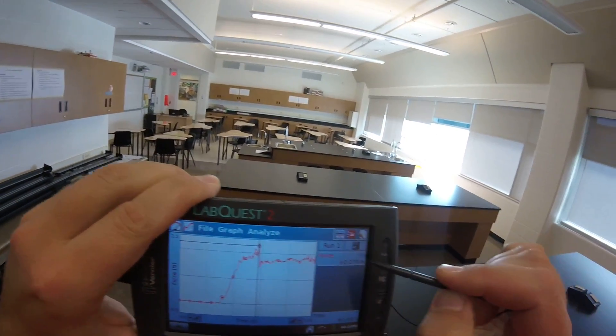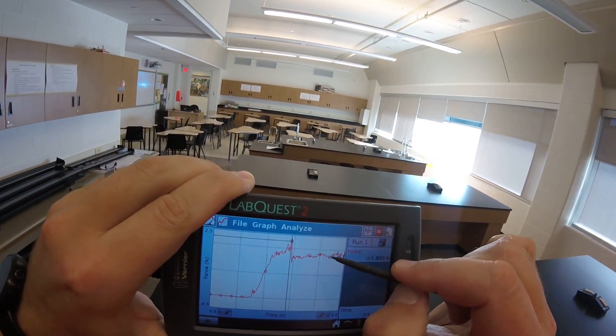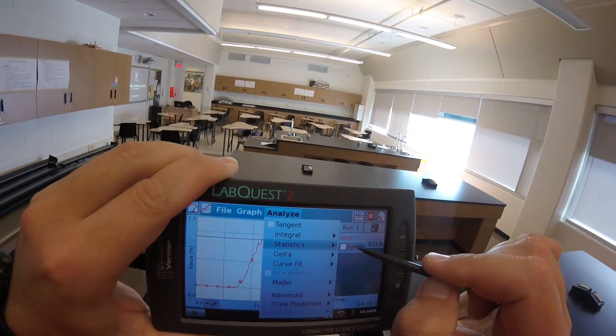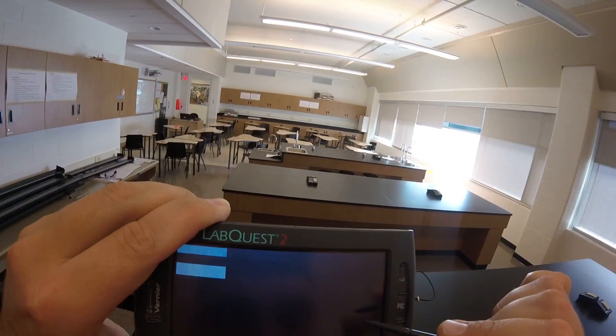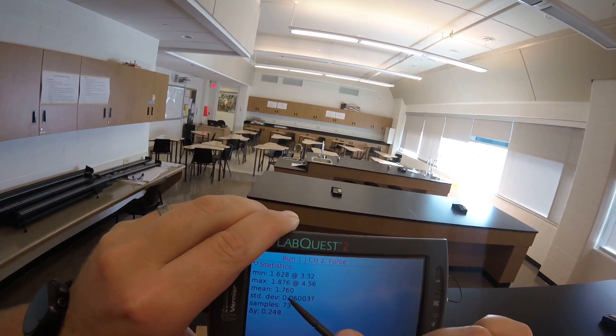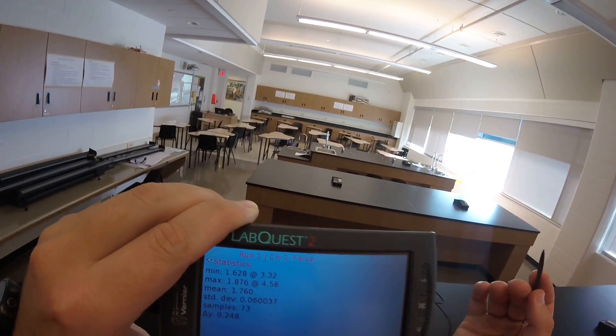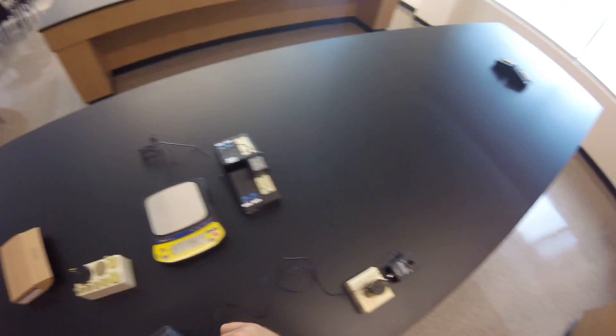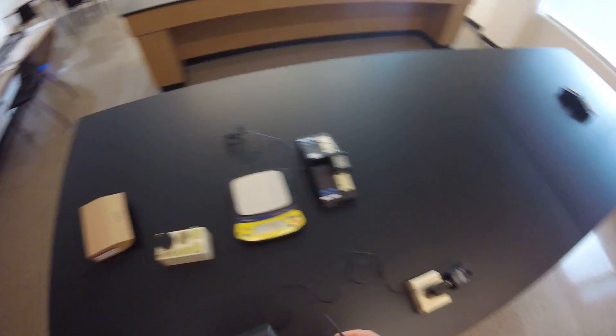That peak value is my static friction. The average of the moving values, analyze, statistics, force, the average is 1.7. That tells me my kinetic friction. So now I have the mass of what I'm pulling from the scale. I've got the force. I can find the coefficients easily.